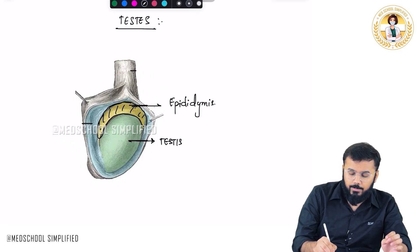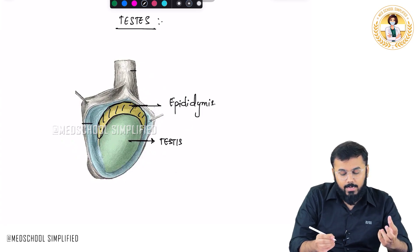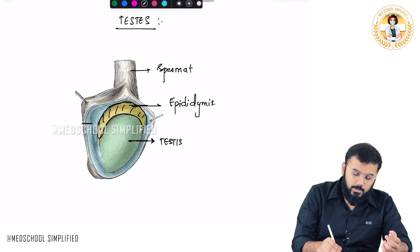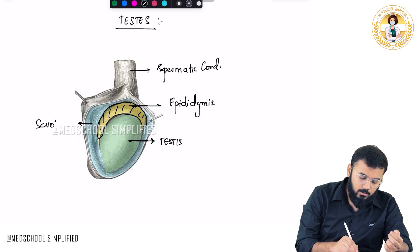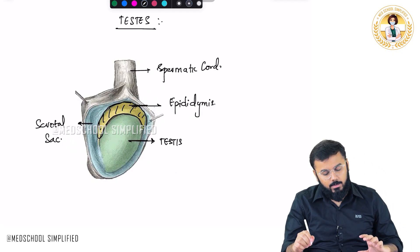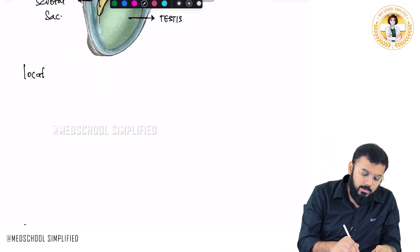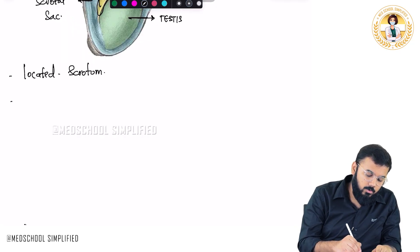This is called as your epididymis. Testes is suspended with the help of spermatic cord. And where is the testes present? Testes is present in a sac called as scrotum - this is your scrotal sac. So, testes is located within the scrotum.